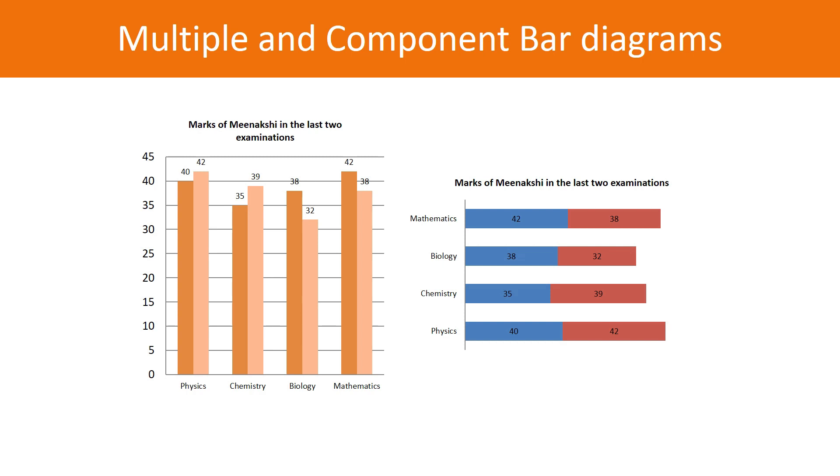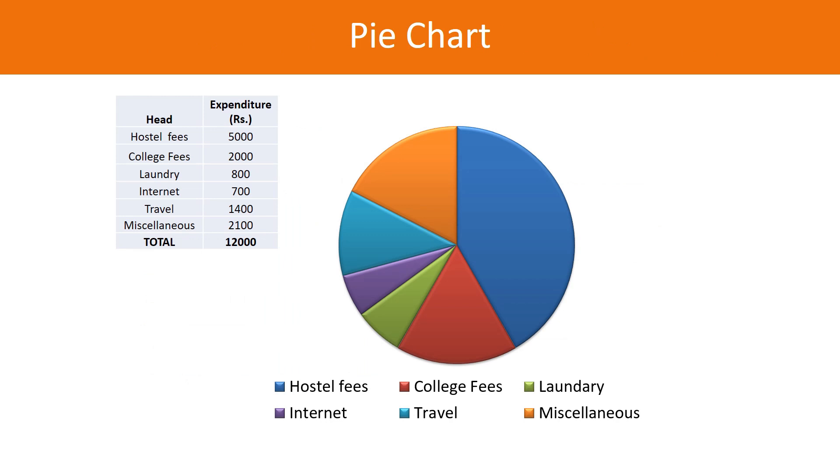This is known as a component bar diagram. These bars can be raised vertically as well as horizontally, so you have freedom to use your creativity to represent the data. Pie chart is another excellent way to represent data.